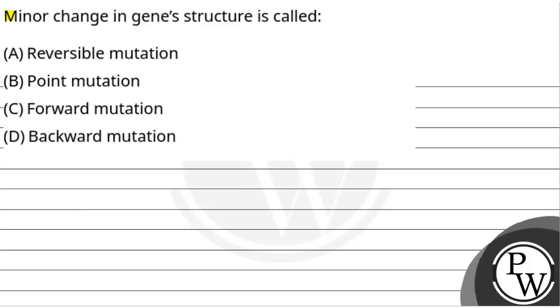Let's read the question. The question here is that a minor change in gene structure is called: reversible mutation, point mutation, forward mutation, or backward mutation.